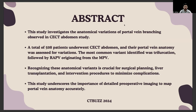Beginning with the abstract, the study investigates the anatomical variations of portal vein branching observed in the CCT scan of abdomen. A total of 508 patients underwent CCT abdomen and their portal vein anatomy was assessed for variations. The most common variation identified was trifurcation, followed by RAPV originating from MPV. Recognizing these anatomical variations is crucial for surgical planning, liver transplantation, and intervention procedures to minimize complications. This study underscores the importance of detailed preoperative imaging to map portal vein anatomy accurately.